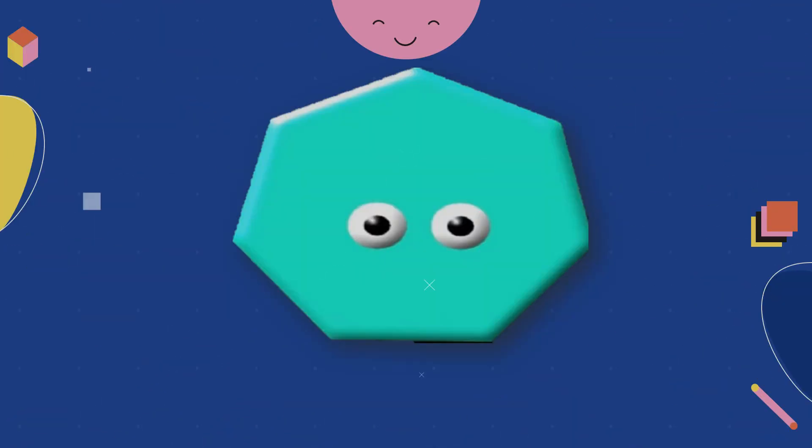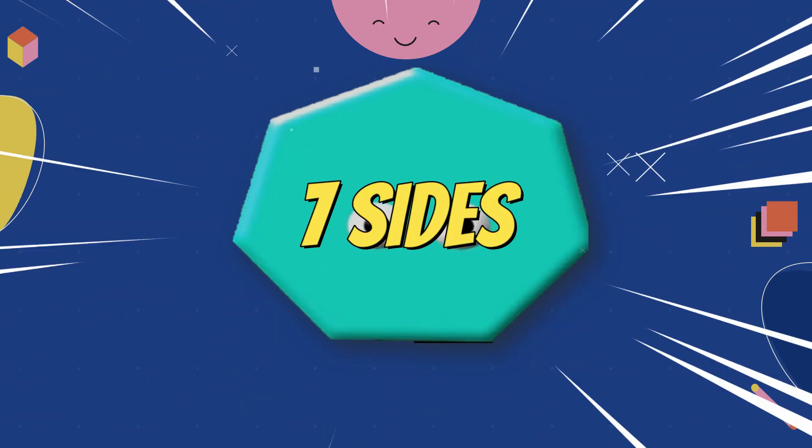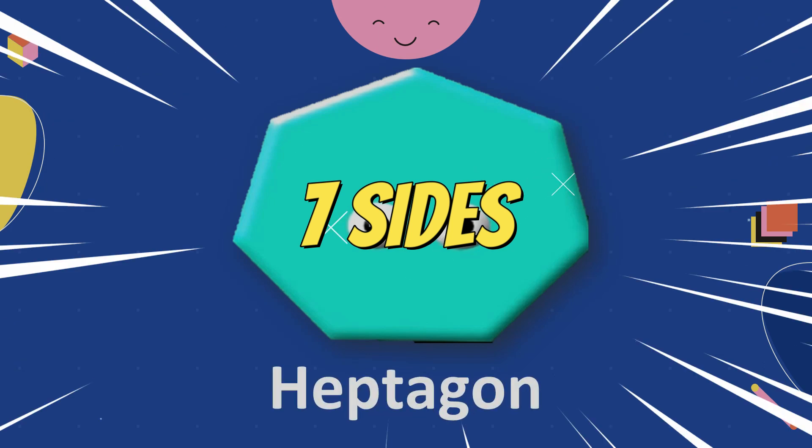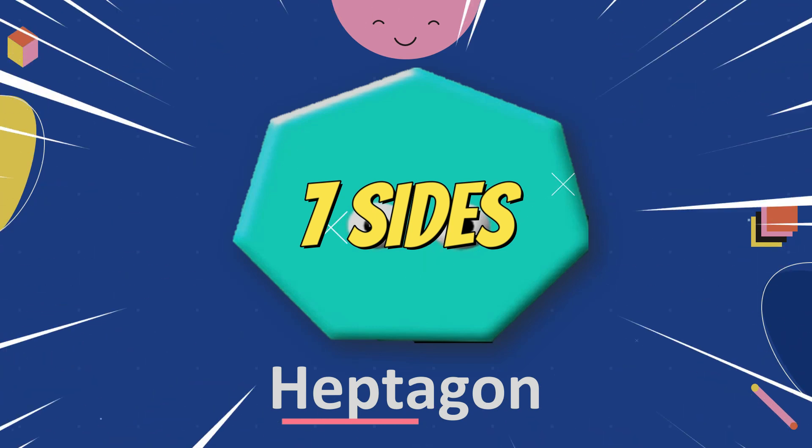Let's count the number of sides. One, two, three, four, five, six, seven. Seven sides is heptagon. Hepta means seven.